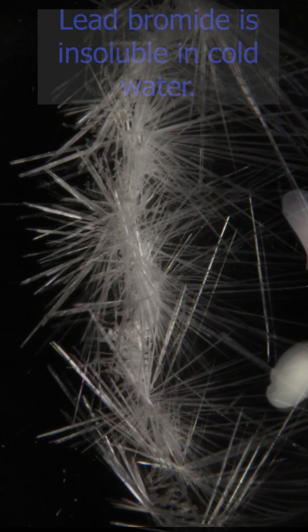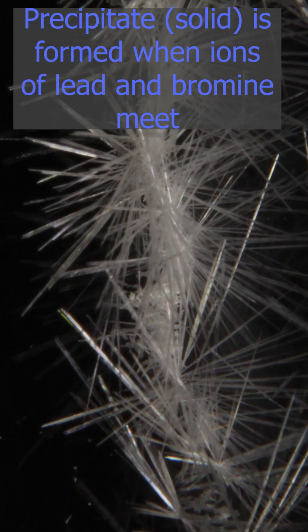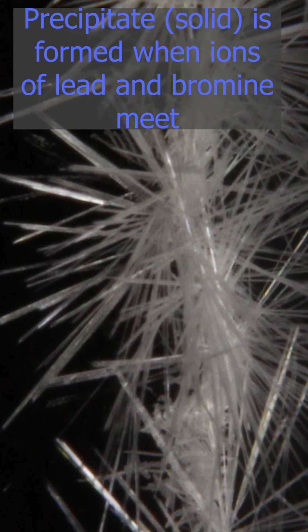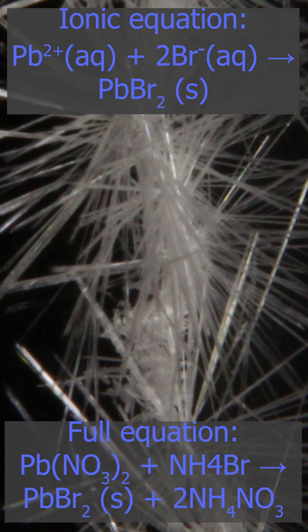Lead chloride, bromide, and iodides are insoluble. But here at high magnification, you can see instead of just white precipitate, beautiful crystals.